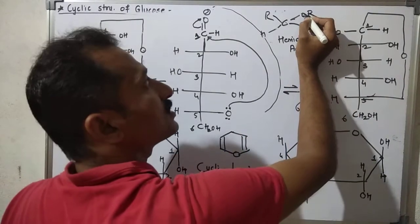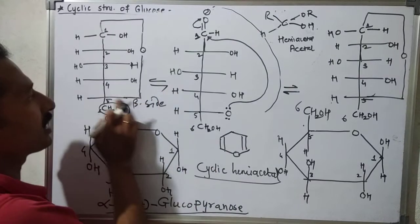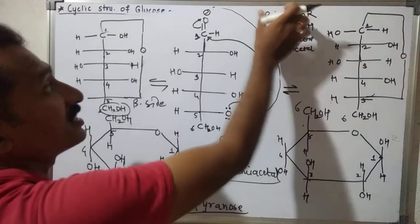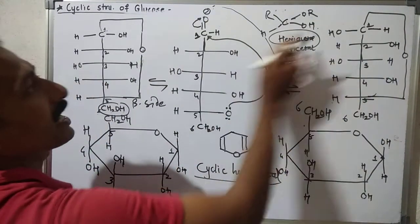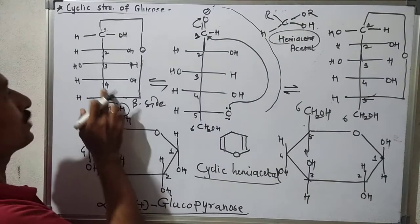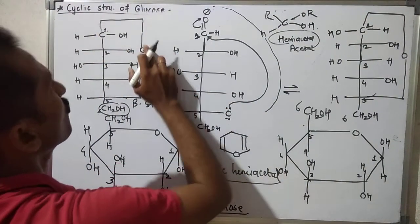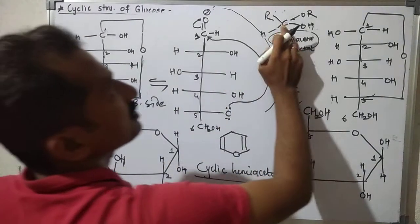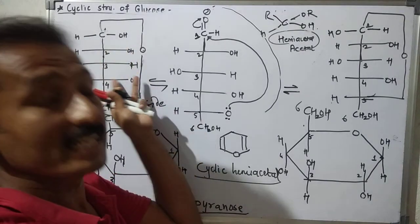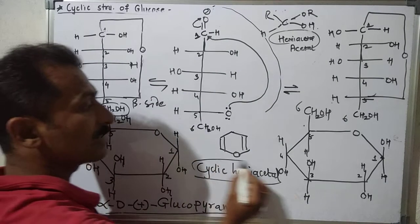That C-O linkage at the anomeric carbon is called a hemiacetal linkage, and the cyclic structure of glucose is a cyclic hemiacetal.